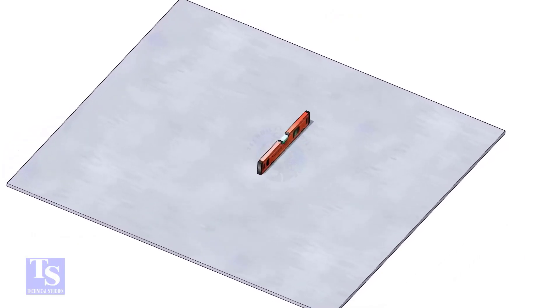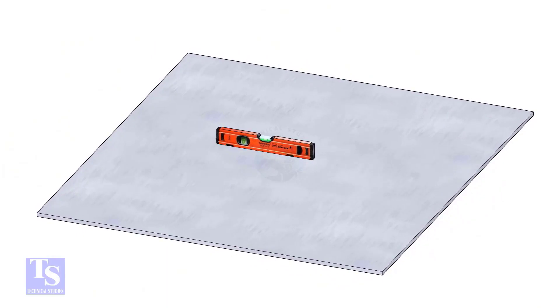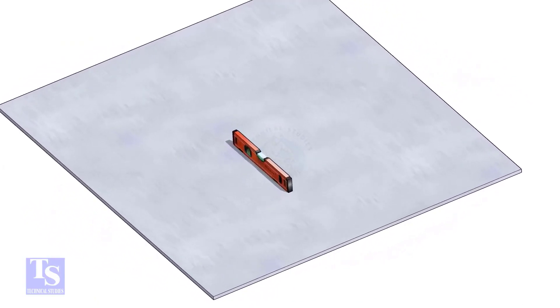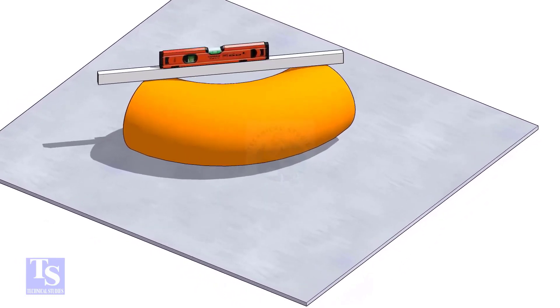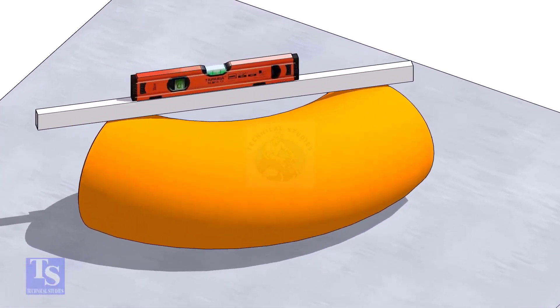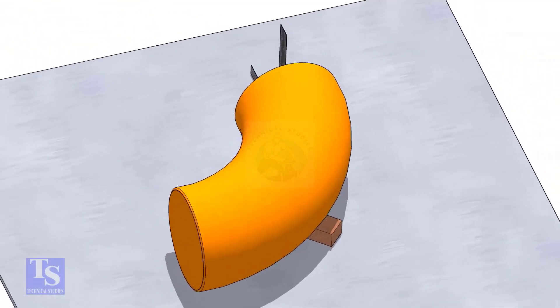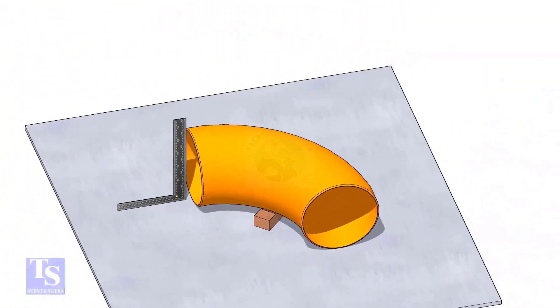Let us mark the center of the elbow. Choose a leveled plate and put the elbow on it. Check the level of the elbow. Check the squareness of the face of the elbow with the plate. If necessary, put some packing below as shown.